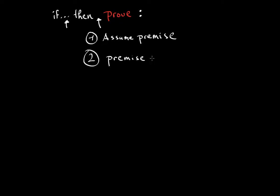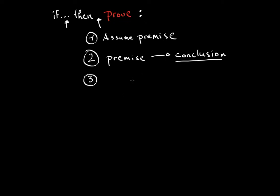You do some sort of mathematical rearrangement, or anything available to you. It doesn't have to be a math equation — it could be something else. Your goal is to use theorems and mathematical knowledge to convert the premise into your conclusion. Once you arrive at your conclusion, that's when your proof ends. You write QED at the end — that just says you concluded your proof.